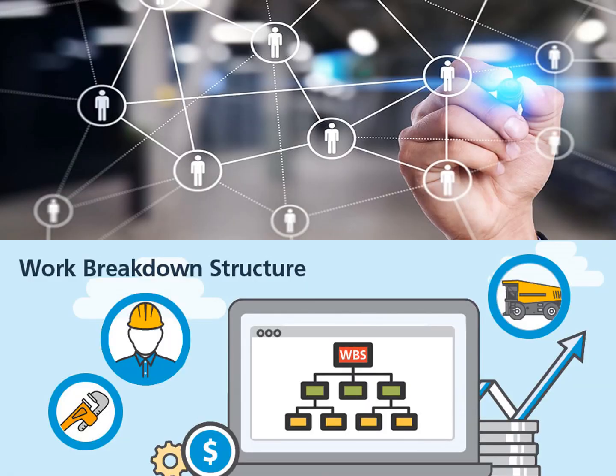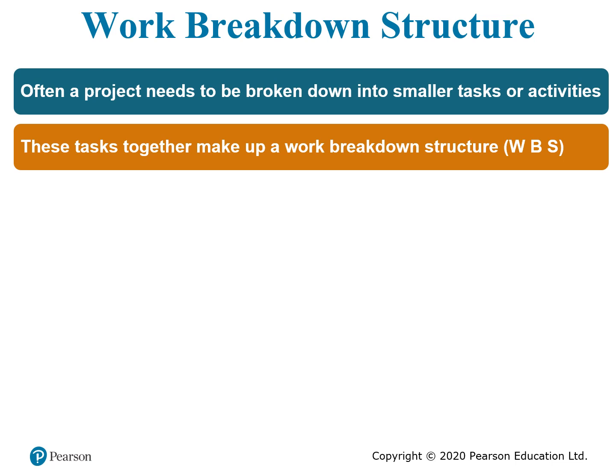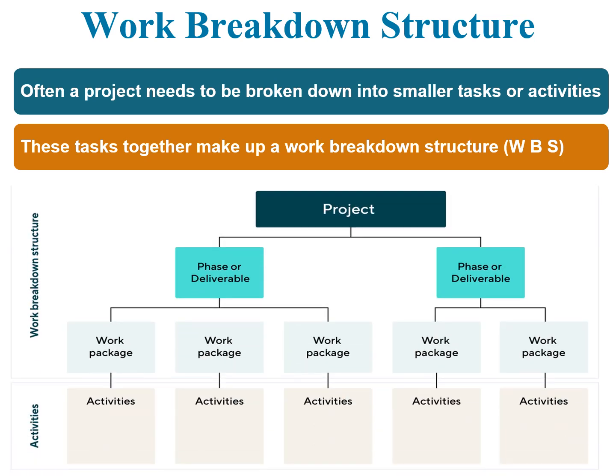Work breakdown structure means breaking down the whole project into smaller phases, then assigning activities and a responsible person, group, or team to handle each breakdown. Often a project needs to be broken down into smaller tasks or activities. These tasks together make up a work breakdown structure, which we call WBS.